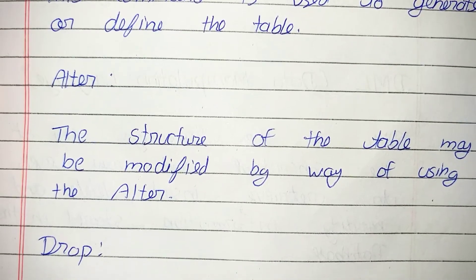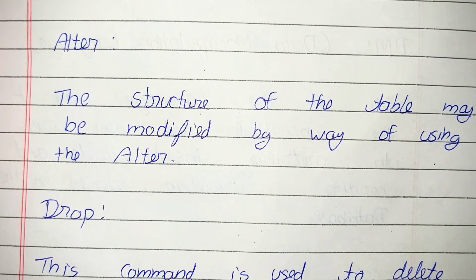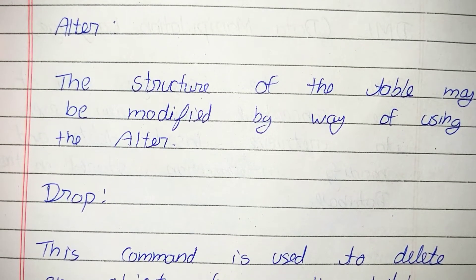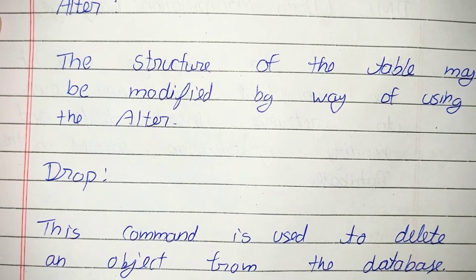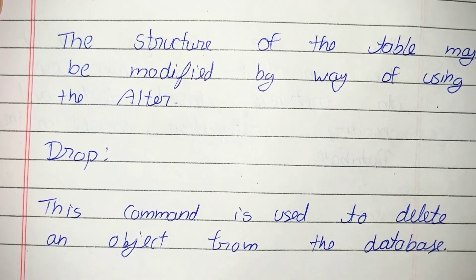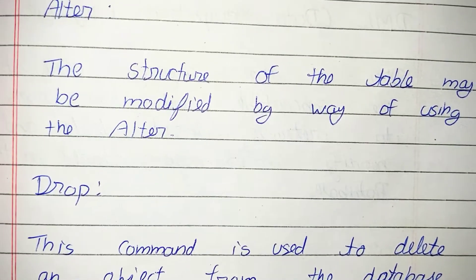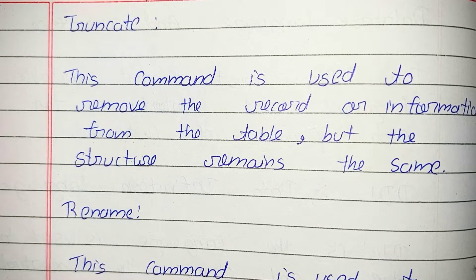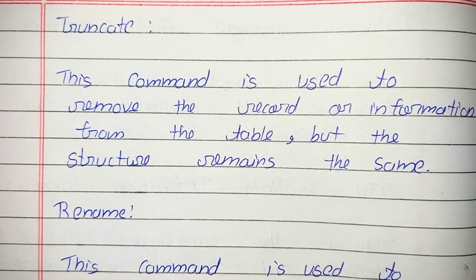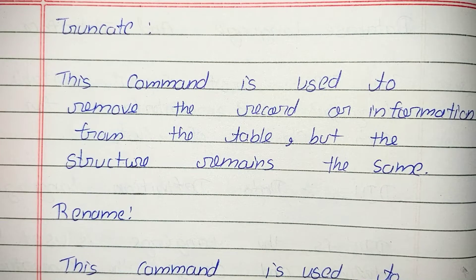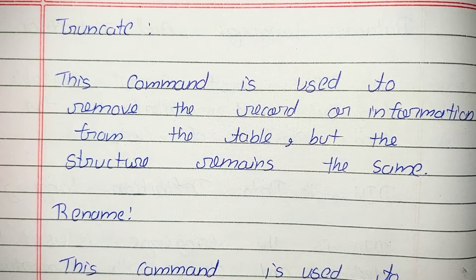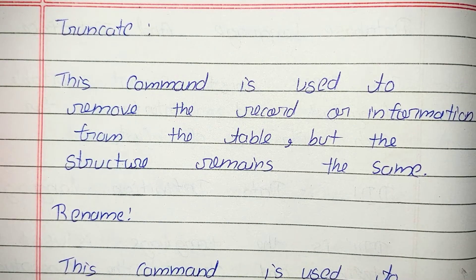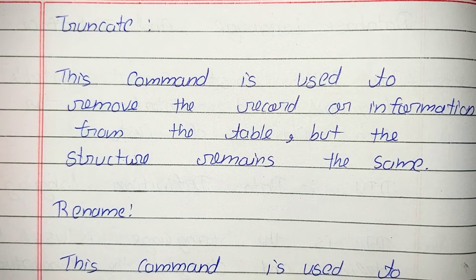Next, drop. This command is used to delete an object from the database. Next command, truncate. This command is used to remove the record or information from the table, but the structure remains the same.